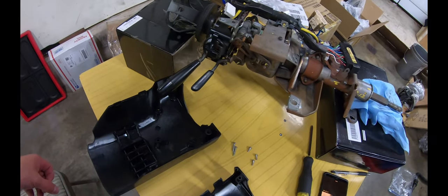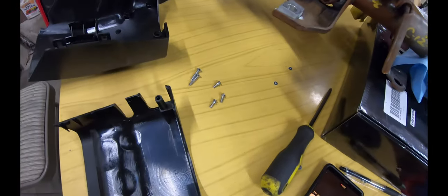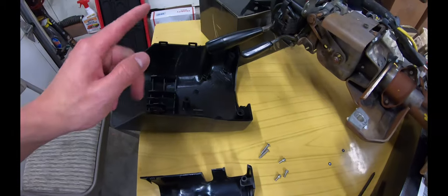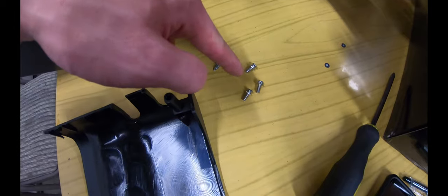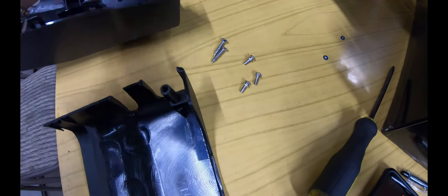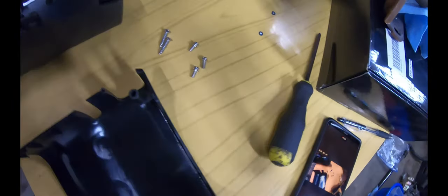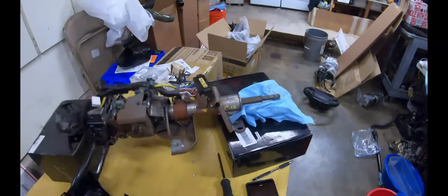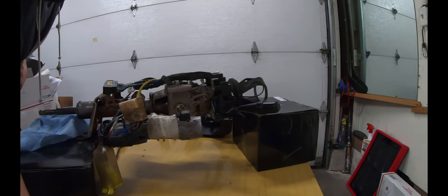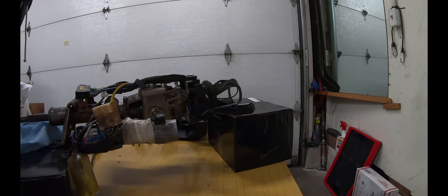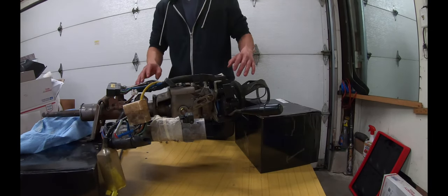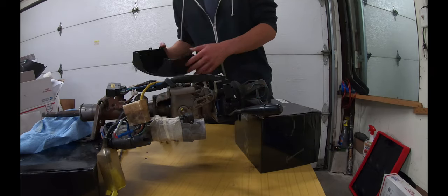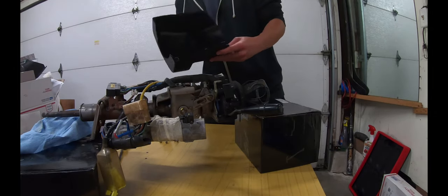Installing these covers is going to be pretty easy. First, you're going to want to install the bottom cover onto the steering column using these three screws. So I'm going to show you guys how to do that right now. I'm going to tilt this after I install the bottom cover so it makes it easier for you guys to see.